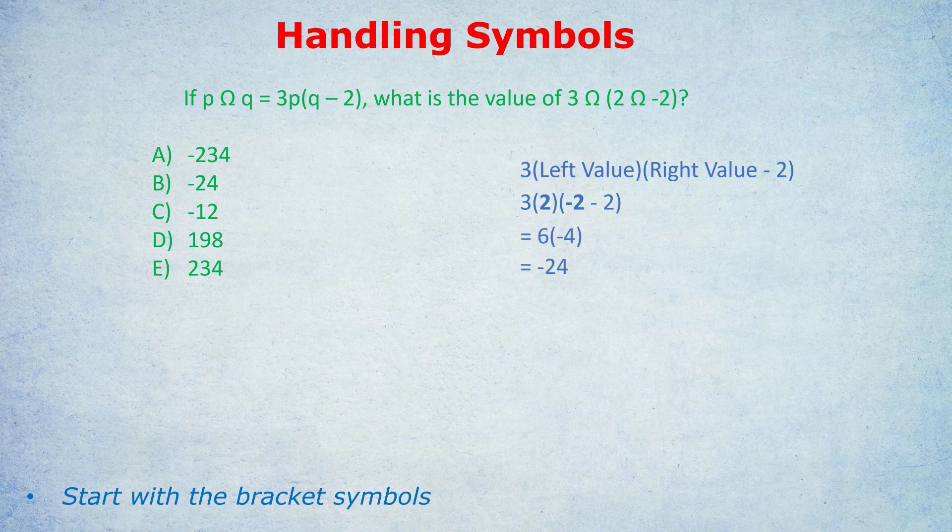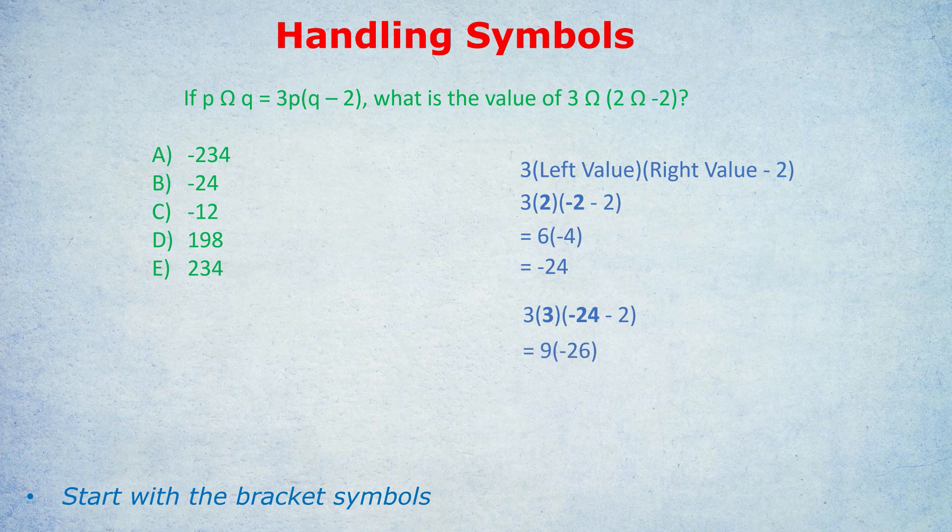Now that becomes our new right value. The question has become 3 symbol (-24). We have a left value of 3 and a right value of (-24). Replacing these values: we get 3 times 3, then (-24) take away 2 in brackets, which is 9 and (-26), which gets us negative 234.